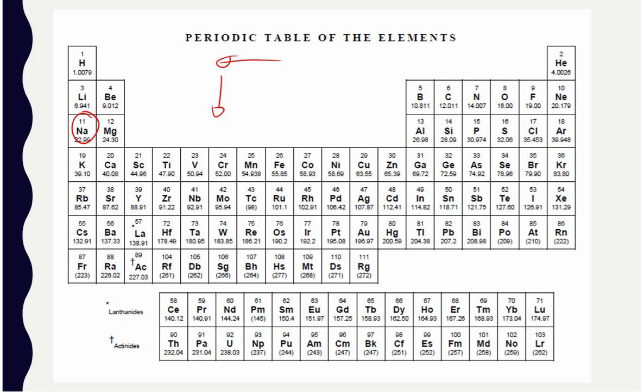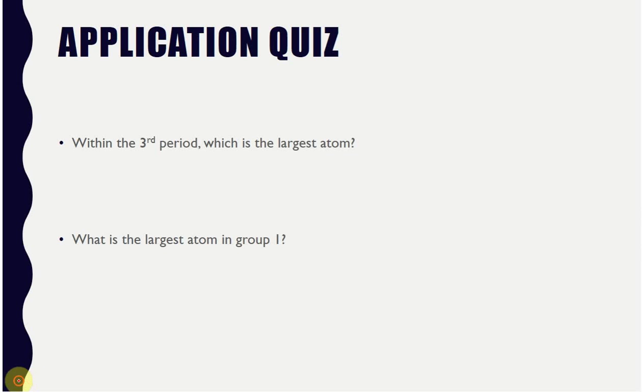If we were looking within the group one, the way that it would be worded is of the following atoms, which has the largest atomic radius. And I would give you something like potassium, sodium, rubidium, cesium, and so on. Doing that, you would be able to choose the one that's the biggest, has the biggest radius, is something like francium.